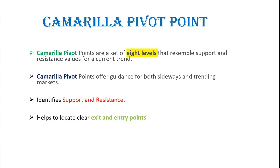Hi friends, Chitra here. Welcome to my YouTube channel. Today we are going to learn how to trade using the Camarilla pivot points. There are many ways to trade using the Camarilla pivot points; this is one of the simplest approaches — to trade only on specific zones. These are support and resistance levels. Traders doing intraday can use Camarilla pivot points, which are a set of eight levels resembling support and resistance values for the current trend.